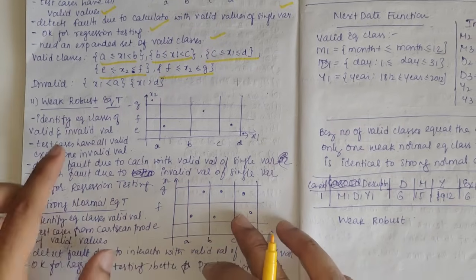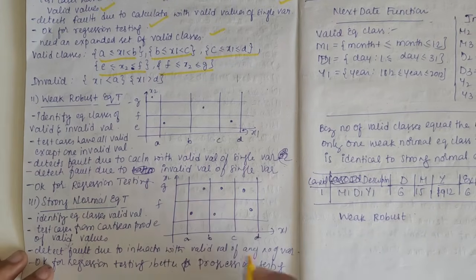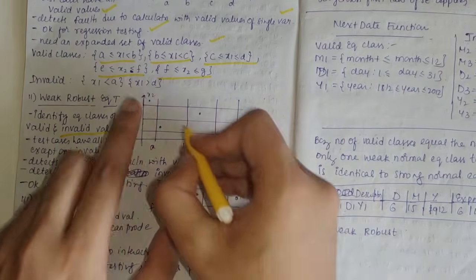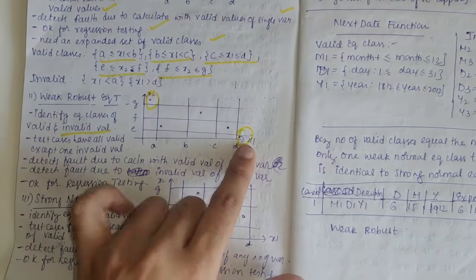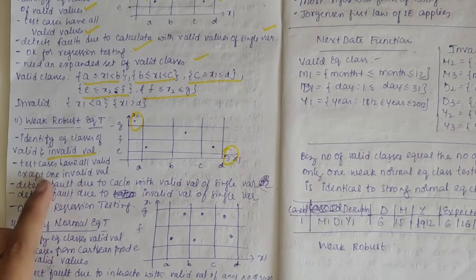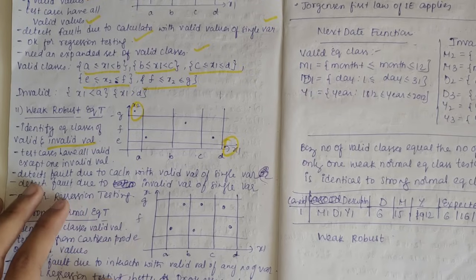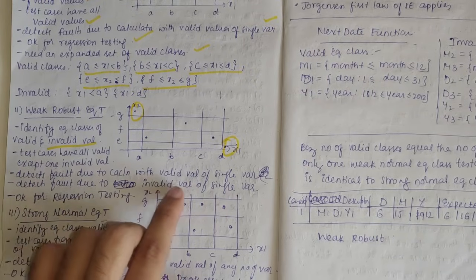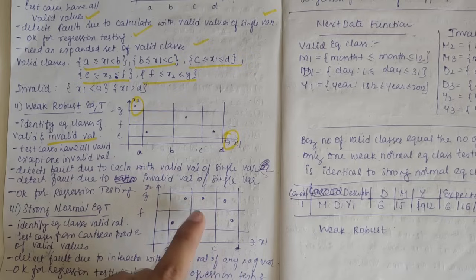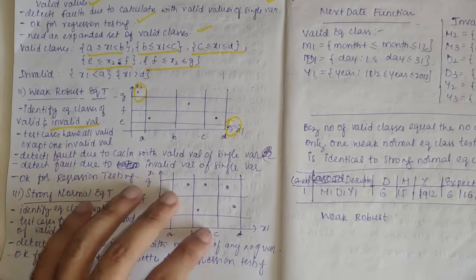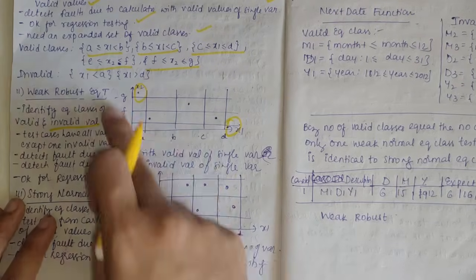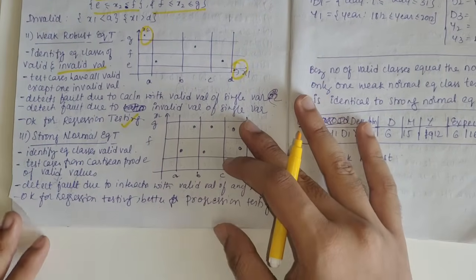Weak robust ECT identifies both valid and invalid equivalence classes. Test cases have all valid classes except one invalid test case. It detects faults due to valid values of a single variable and also detects faults from invalid values of a single variable. This is acceptable for regression testing.